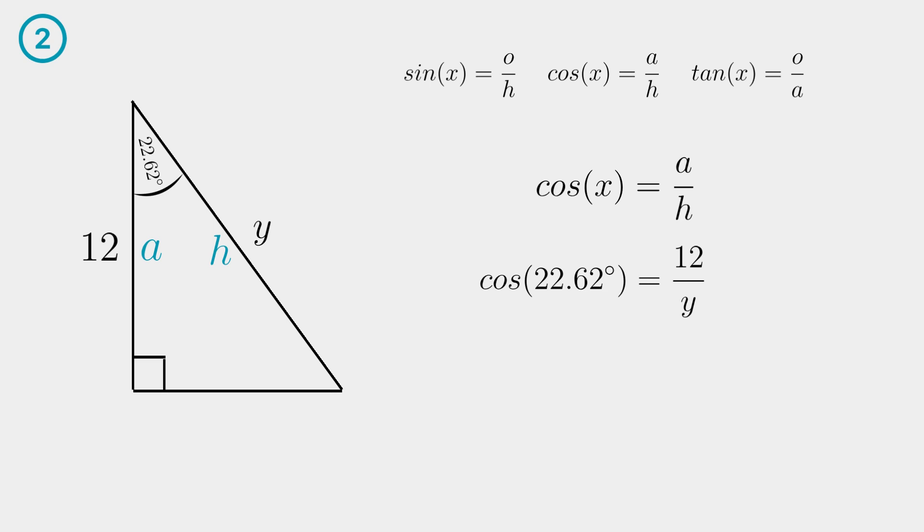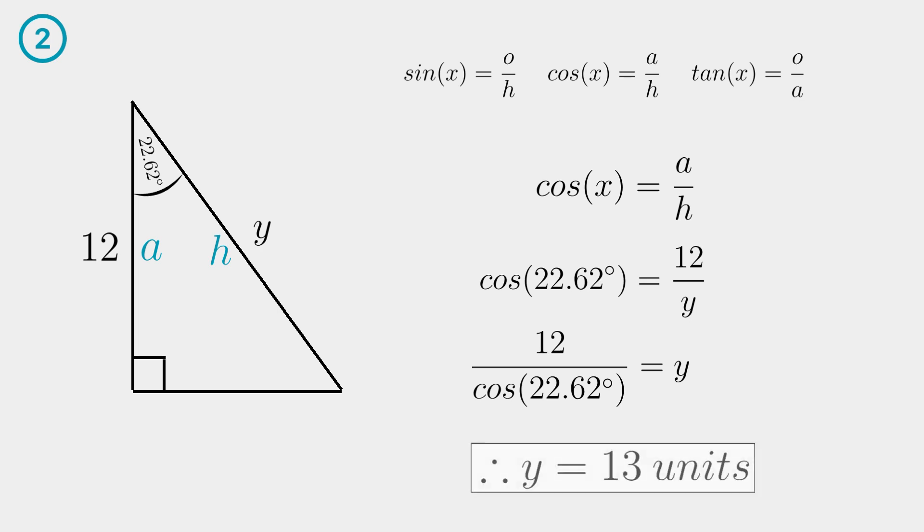How you do that is you get the reciprocal of both sides and then times both sides by twelve. Type twelve over cosine twenty two point six two into your calculator and you will get your answer. Y is equal to thirteen units.